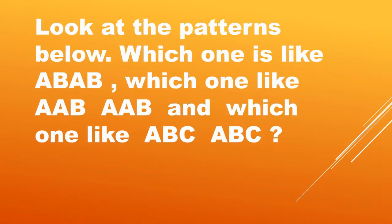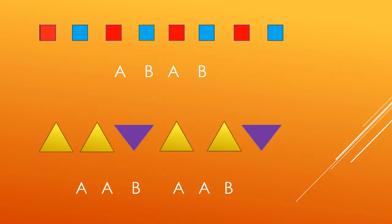Look at the patterns below. Which one is like A, B, A, B? Which one is like A, A, B, A, A, B? And which one is like A, B, C, A, B, C? Let's see. In the first picture, there is red color, then blue, then red, then blue — repeating. So this is an A, B, A, B type pattern. The next pattern has two yellow triangles, then one purple, then again two yellow triangles, then one purple — so it is an A, A, B, A, A, B type pattern.